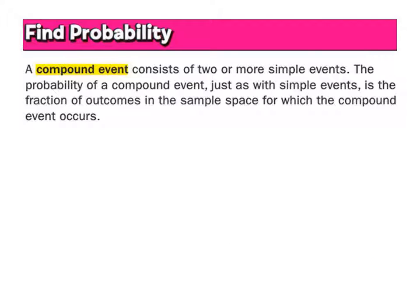Now, this compound event stuff is all the same — instead of just rolling a die and seeing what happens, now we're going to start doing many things, like rolling a number cube two or three times, or rolling a number cube and tossing a coin and spinning something, or spinning something twice, rolling a number cube, and tossing a coin twice. That is a compound event — it's where more than one thing is happening.